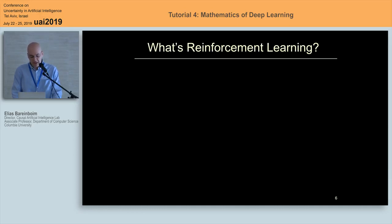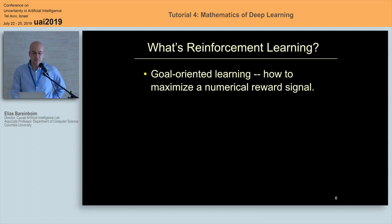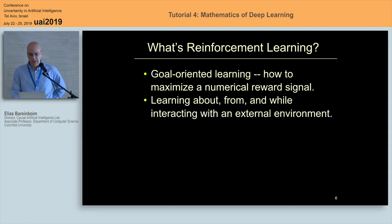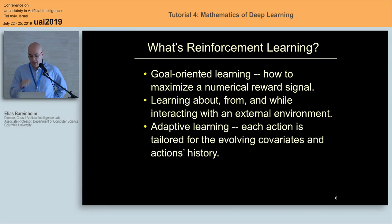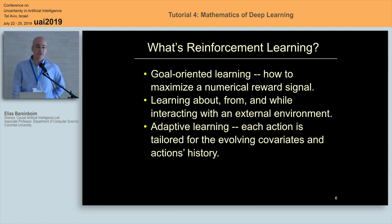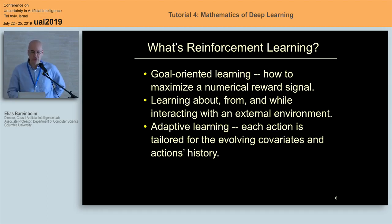Let me talk about reinforcement learning. Everyone here is familiar. This is a kind of textbook definition: it's a goal-oriented mode of learning where you are trying to maximize some type of numeric reward signal, learning from and while interacting with an external environment. You have this notion of environment and some kind of adaptation — adaptive learning — each action tailored for the evolving set of covariates or features and the action history of what you did in the past.